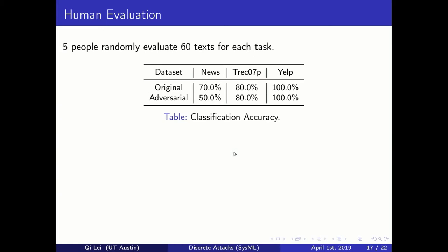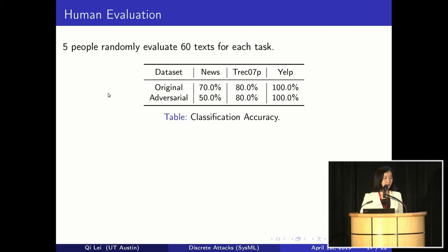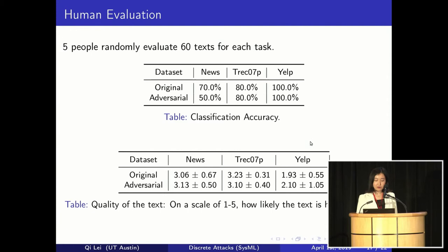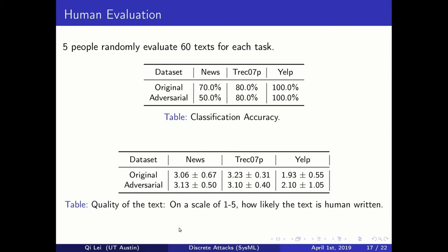To verify that our definition of small perturbations using small semantic and syntactic distances makes sense, we also conduct a human evaluation. We asked five people to evaluate 60 examples for each task. We show that on both the emails and the Yelp reviews, before or after adversarial attacks, human prediction accuracy is similar. We also asked people to rate on a scale of one to five how likely the text is human-written, and again across all three datasets, before or after adversarial attacks, they show similar results.